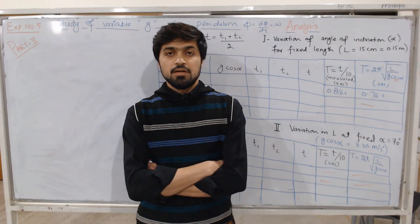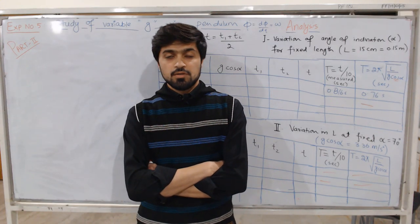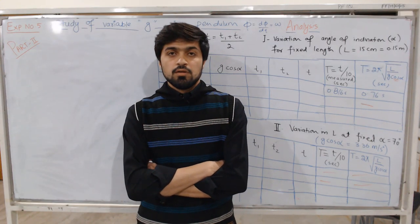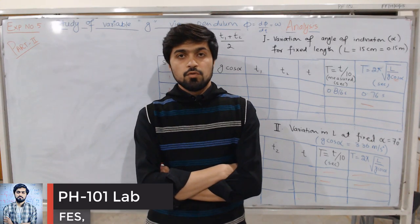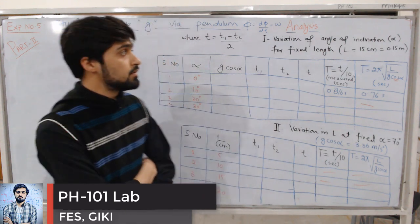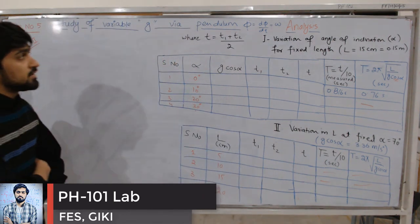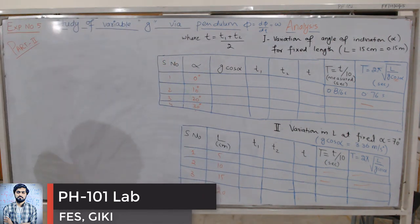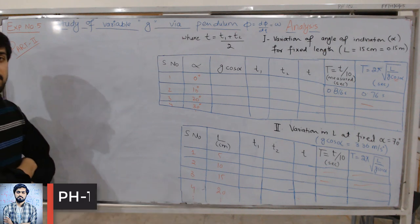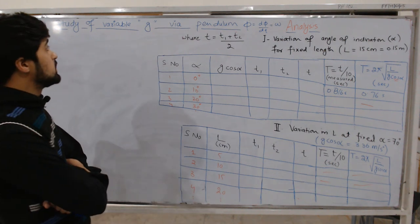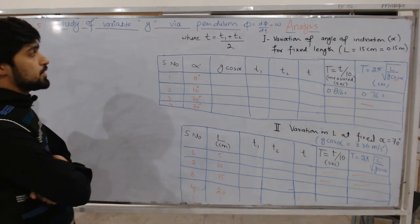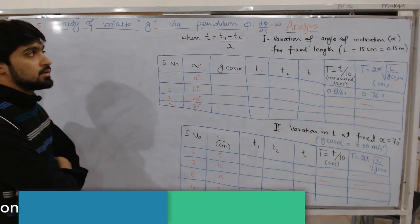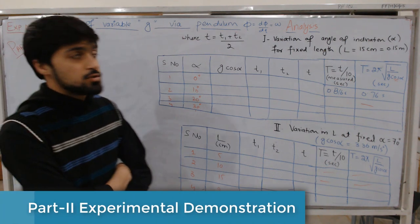In the name of Allah Almighty, the Beneficent and the Merciful, welcome to PH101 Lab. This is experiment number 5, the experimental demonstration part of experiment number 5: study of variable g via pendulum.